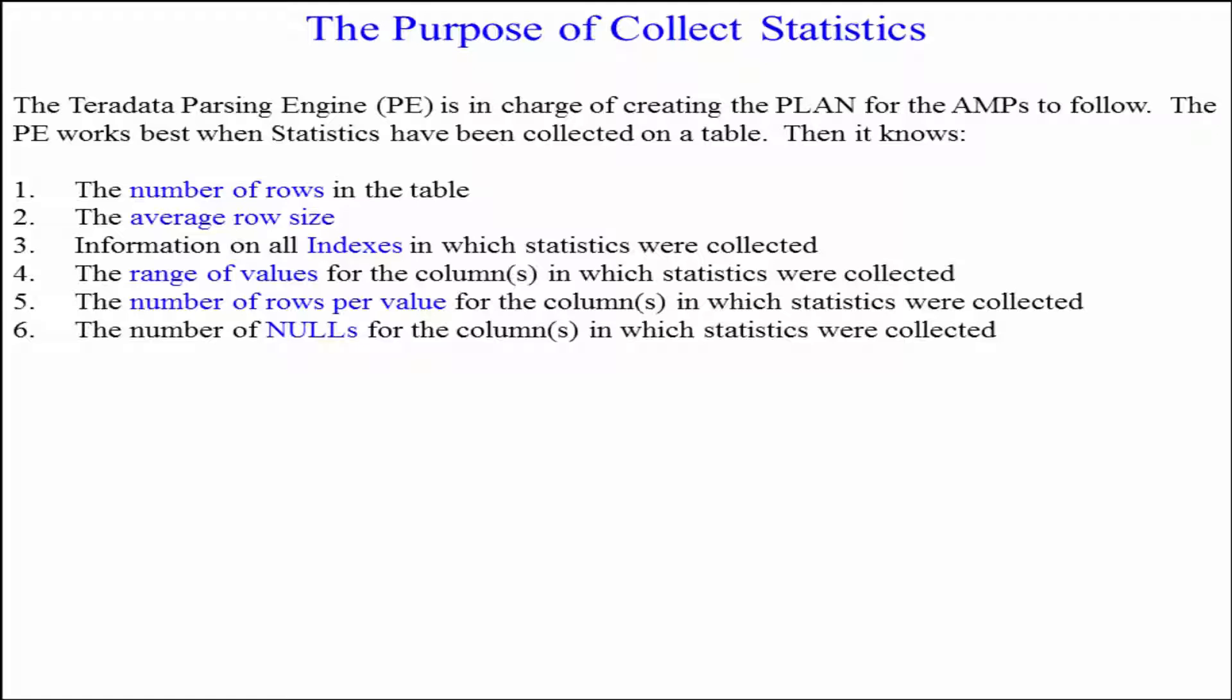When you collect statistics, the optimizer knows the number of rows in the table, the average row size, information on all indexes in which statistics were collected, the range of values for the columns in which statistics were collected, the number of rows per value for the columns in which statistics were collected, and the number of nulls for the columns in which statistics were collected.